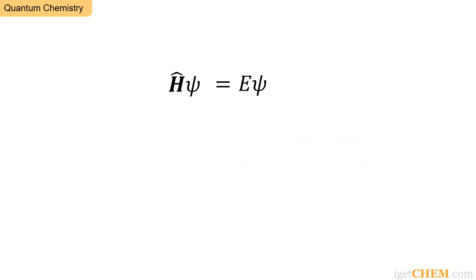A key equation in quantum mechanics is the Schrödinger's equation, or more precisely the time-independent Schrödinger's equation. H psi equals E psi. In mathematics, this equation is called an eigenfunction, eigenvalue problem. Let's take a closer look at what it means.